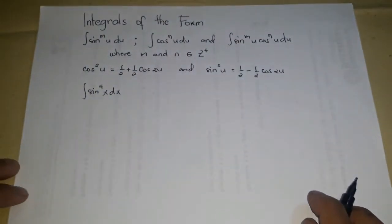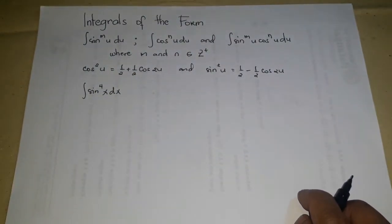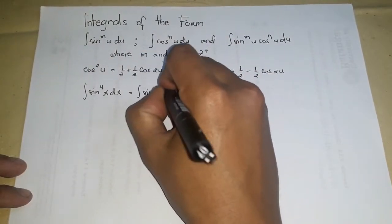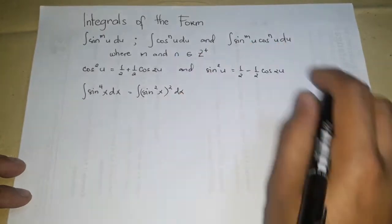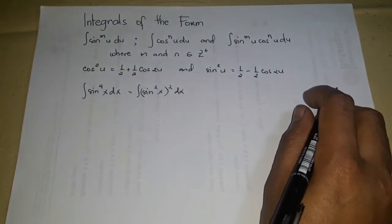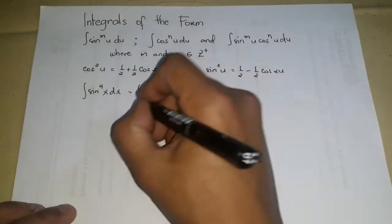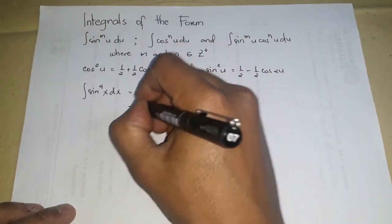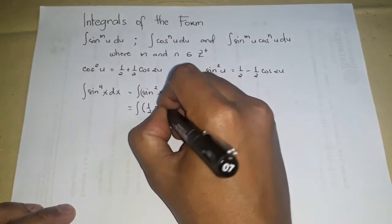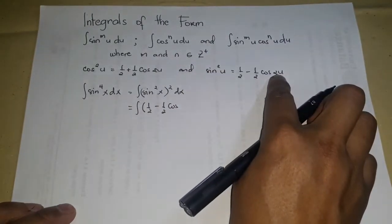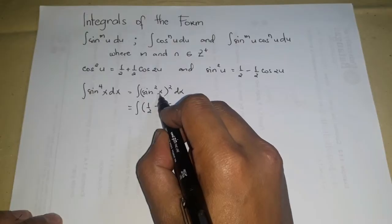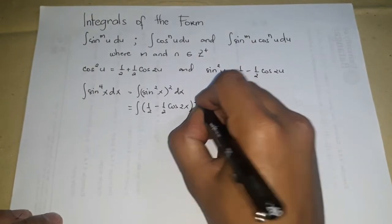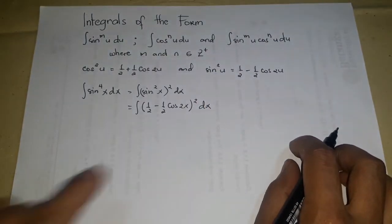sin⁴(x) dx can be written as [sin²(x)]² dx. Since sin²(x) = 1/2 − (1/2)cos(2x), we substitute and write this as [1/2 − (1/2)cos(2x)]² dx. Note that we are doubling the angle, so it becomes 2x, raised to the second power.